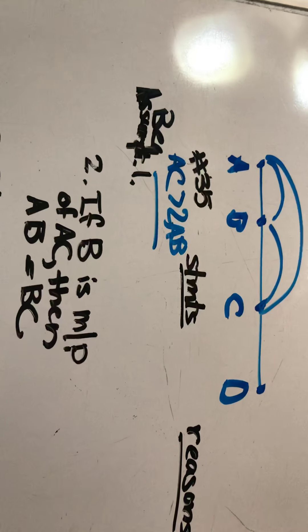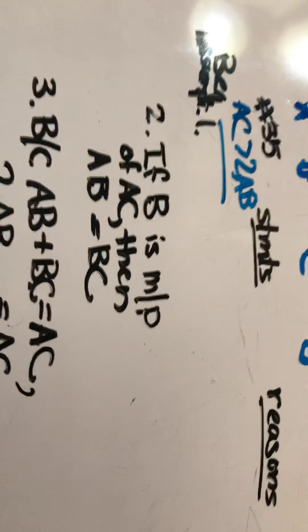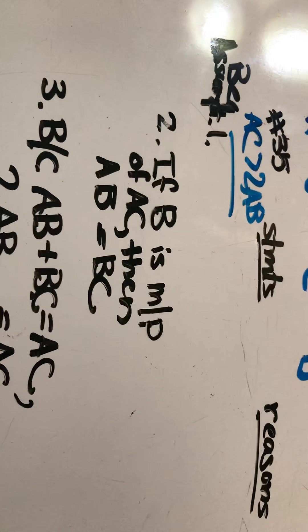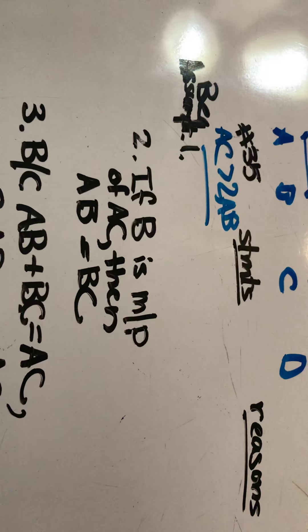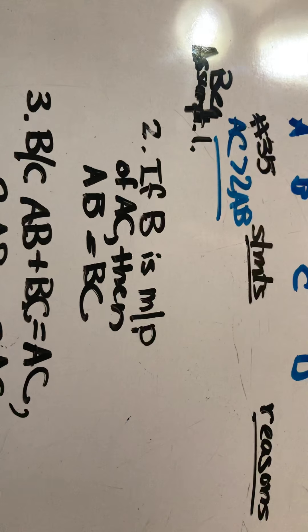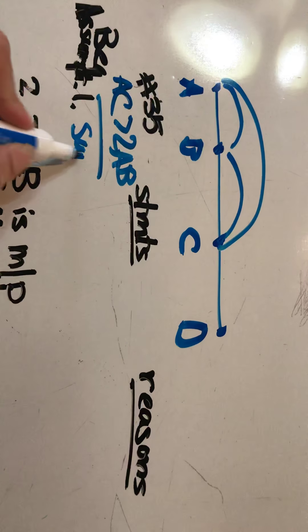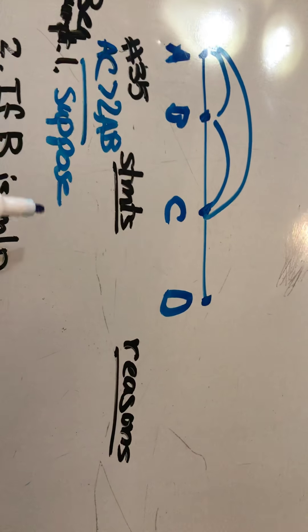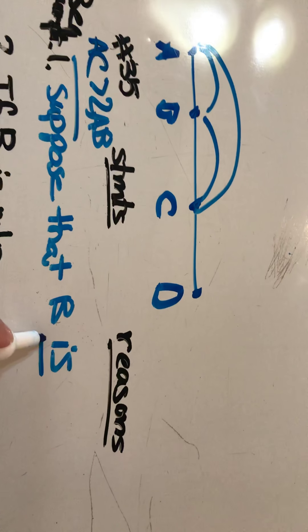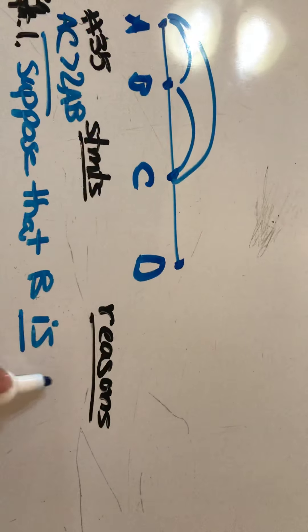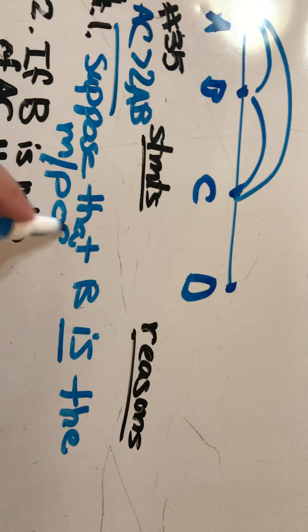Supply the missing statements and reasons in this indirect proof. So it's an indirect proof. So by definition, our first statement will be suppose not whatever we're trying to prove. And we're trying to prove that B is not the midpoint of AC. So our first assumption will be suppose the opposite of that. Suppose that B is the midpoint of AC.